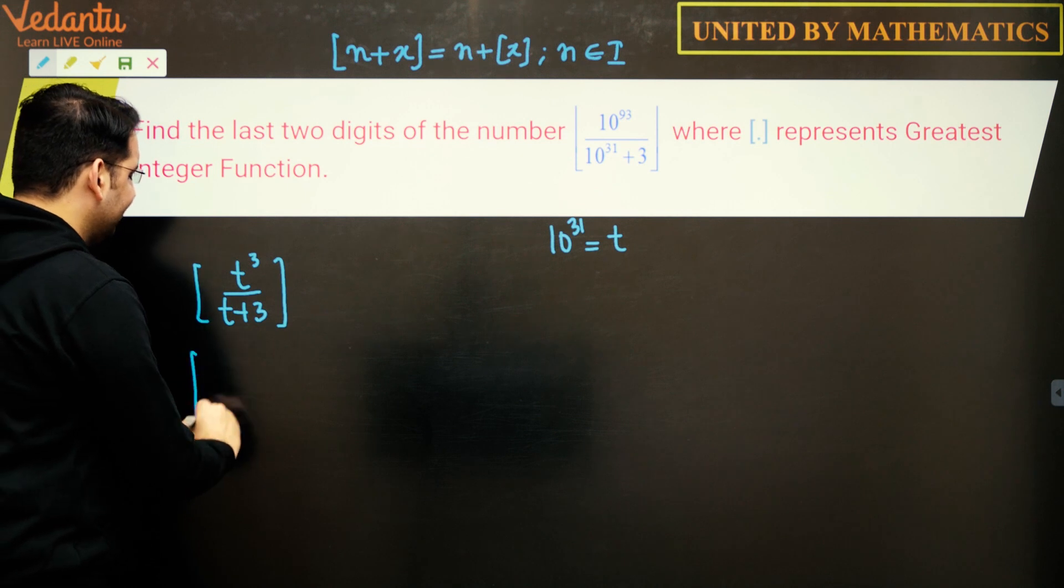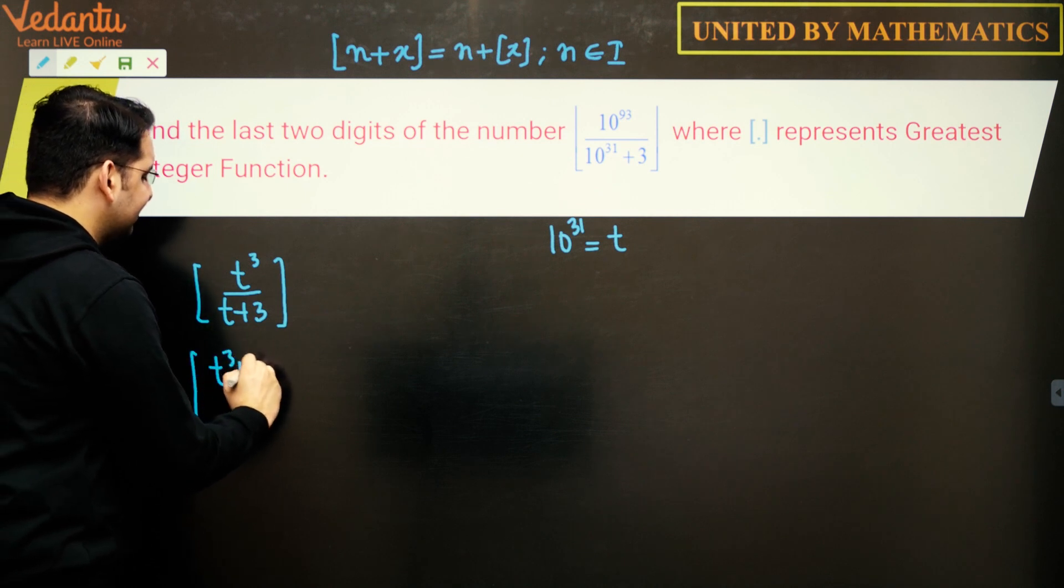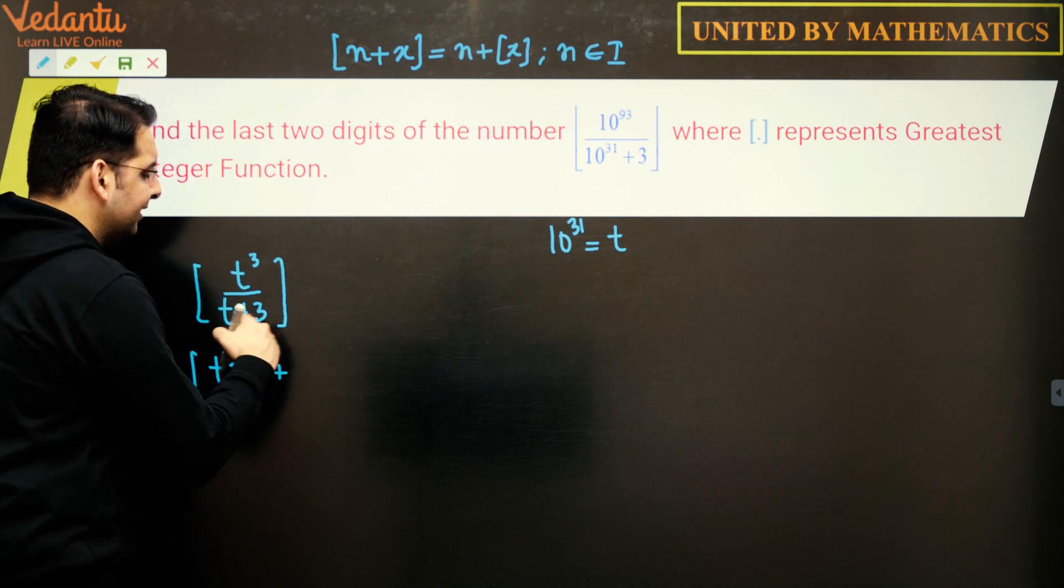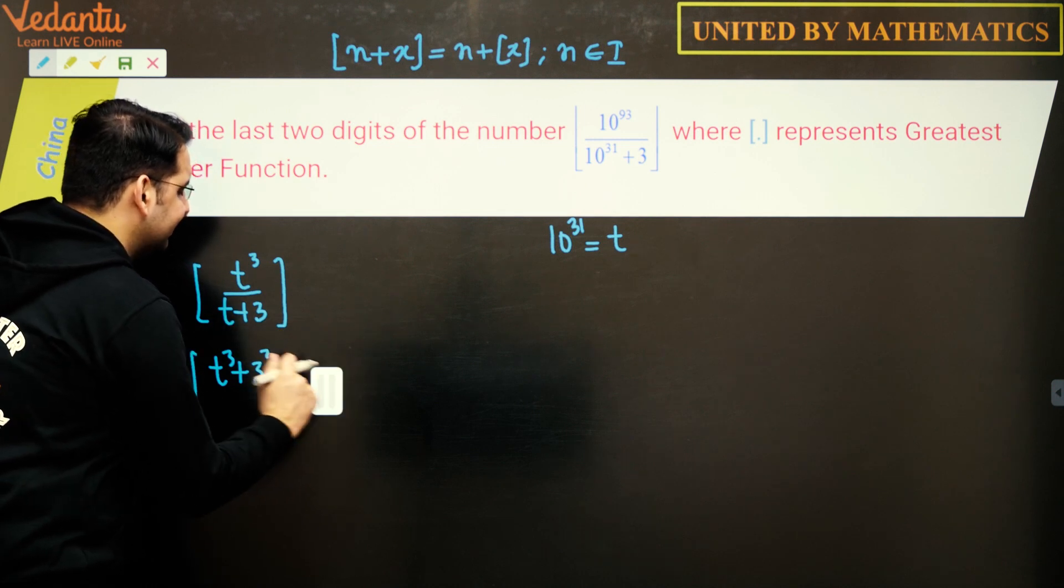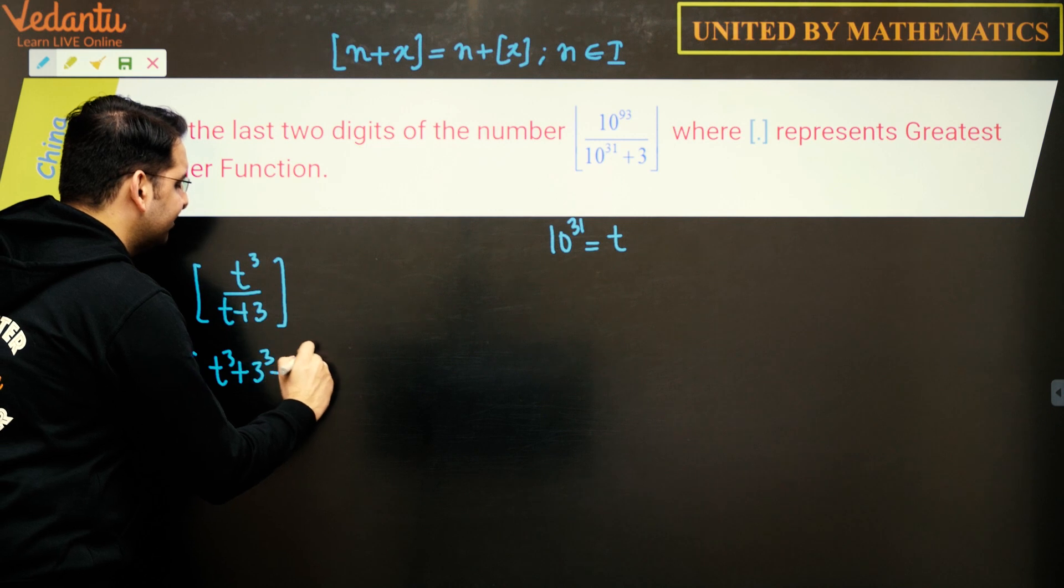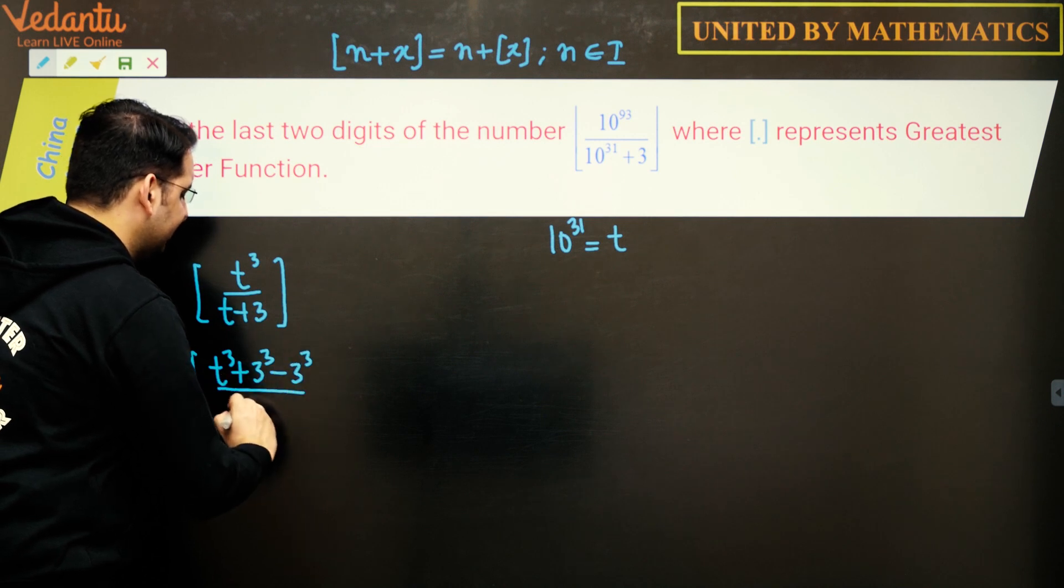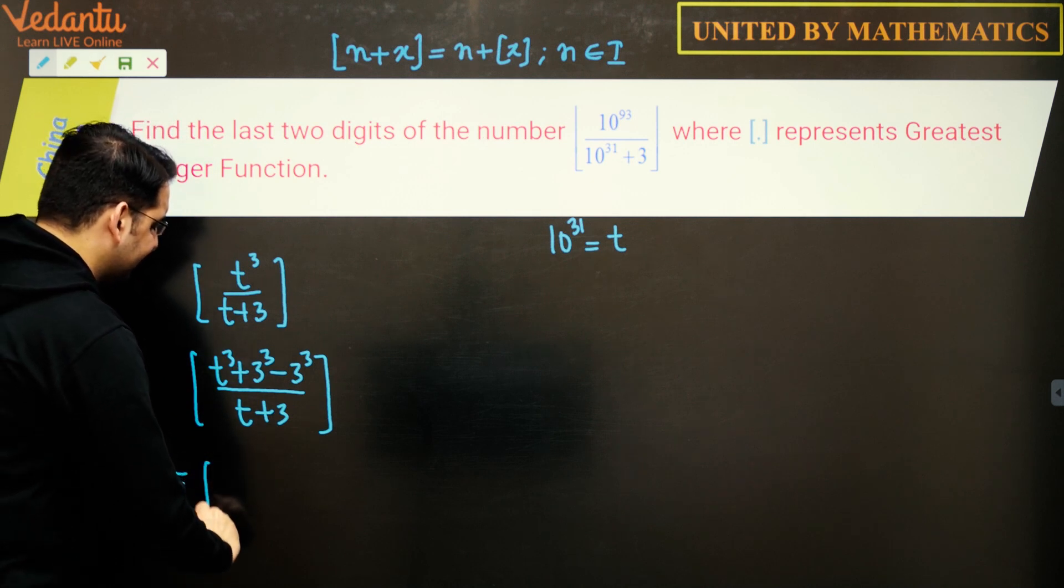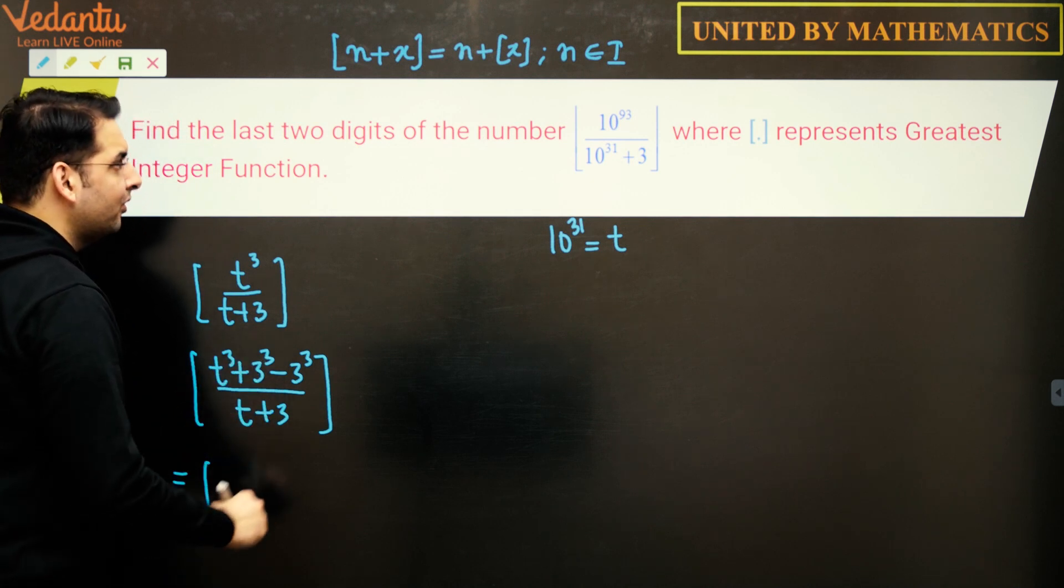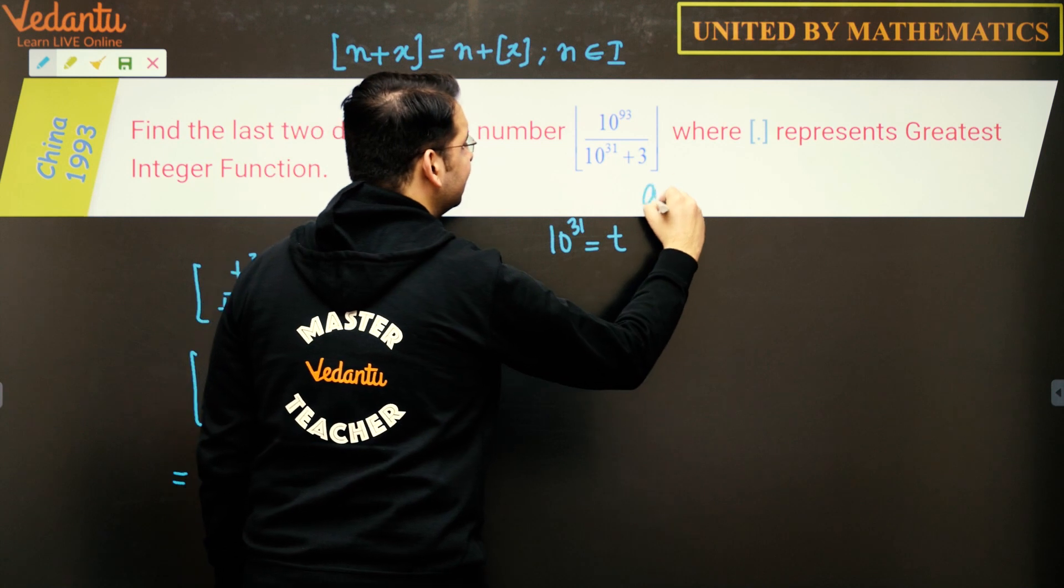How do we simplify this? Clearly we need to add 3³ and subtract 3³ so that we can do something with the denominator. So 3³ gets added, 3³ gets subtracted in the numerator upon t plus 3.